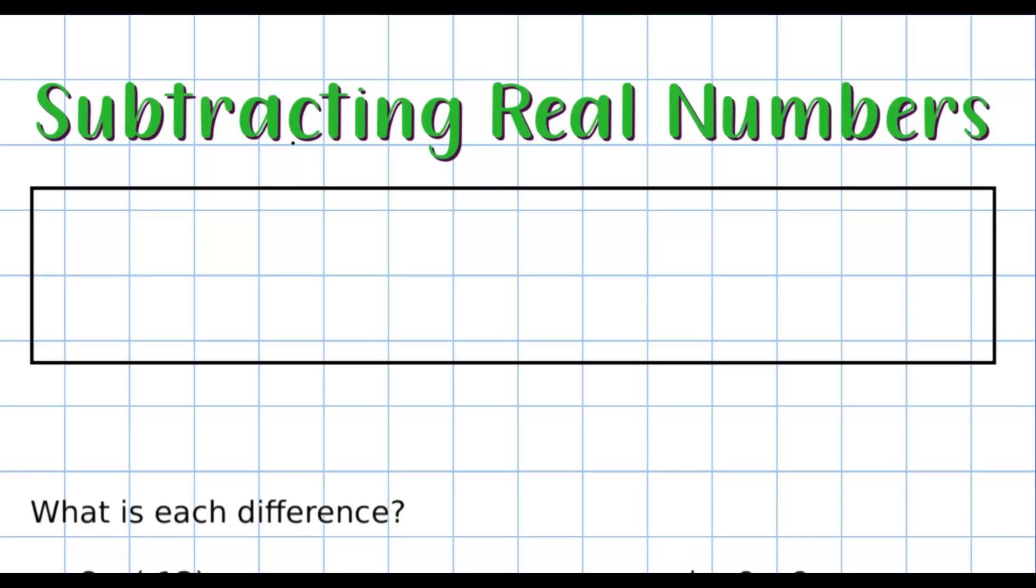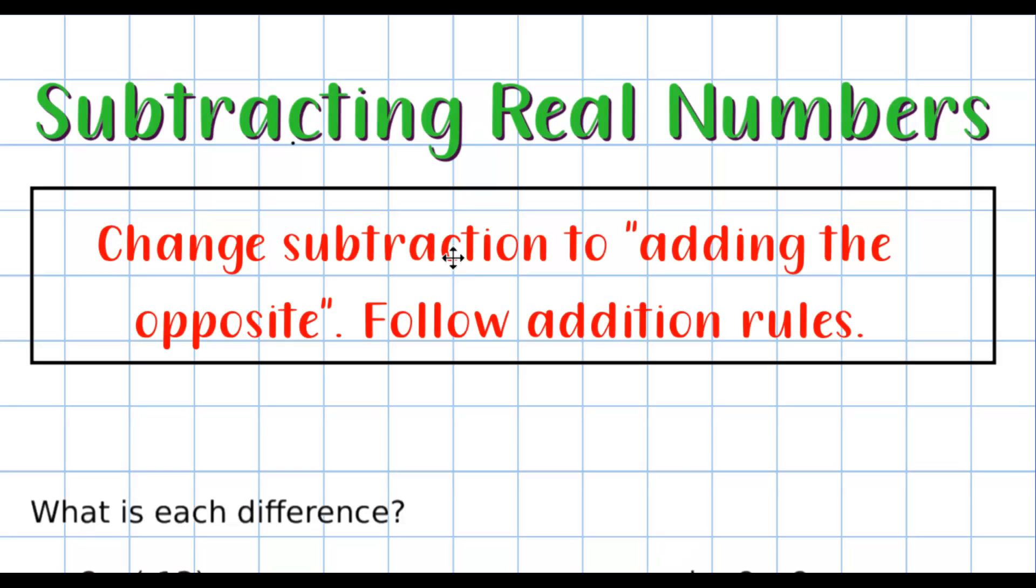Alright, that was adding. Now, when you subtract two real numbers, again, there are several ways to do these problems, several ways to explain it. So here's the algebraic way. Every time you see a subtraction, you're going to change the subtraction to adding the opposite. And once you've switched it to an addition problem, then you follow the addition rules. So what does that look like?